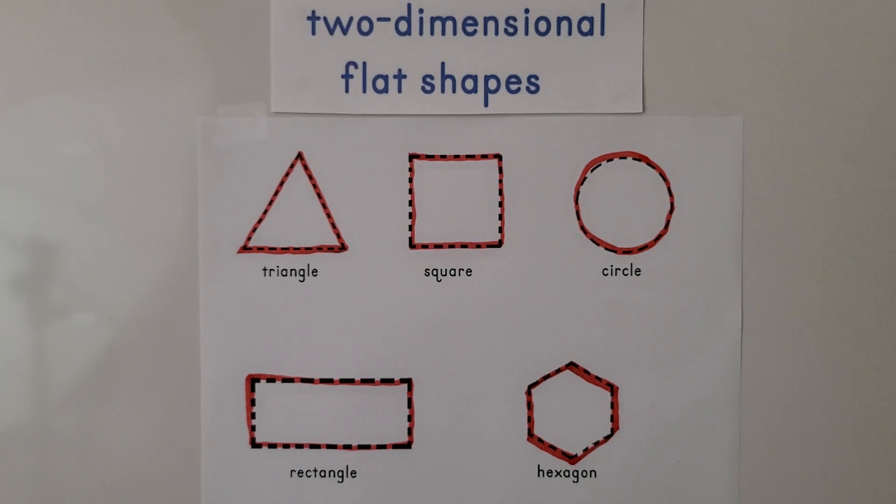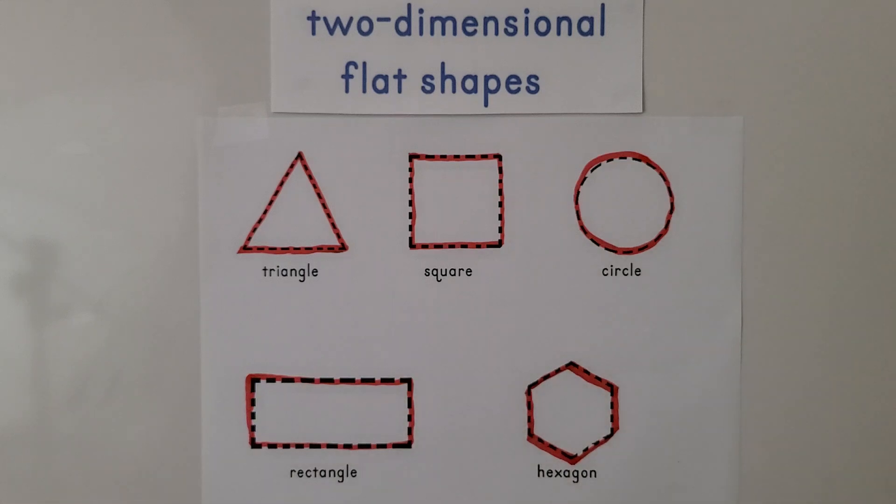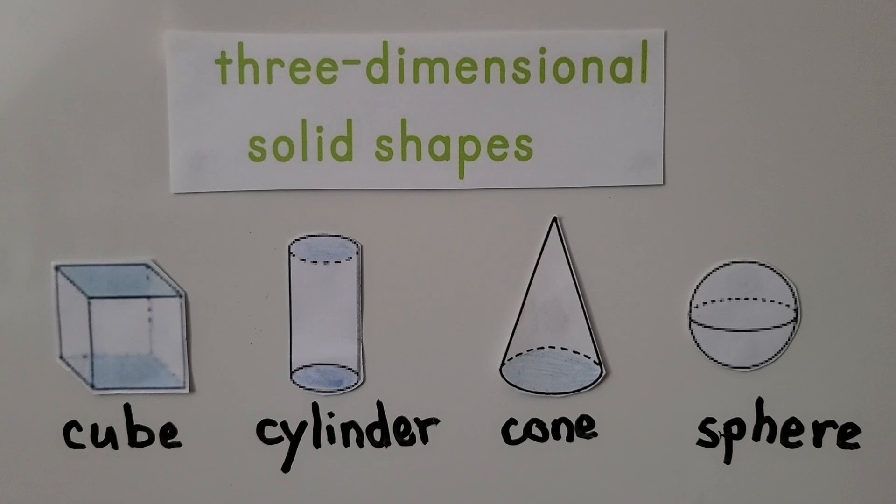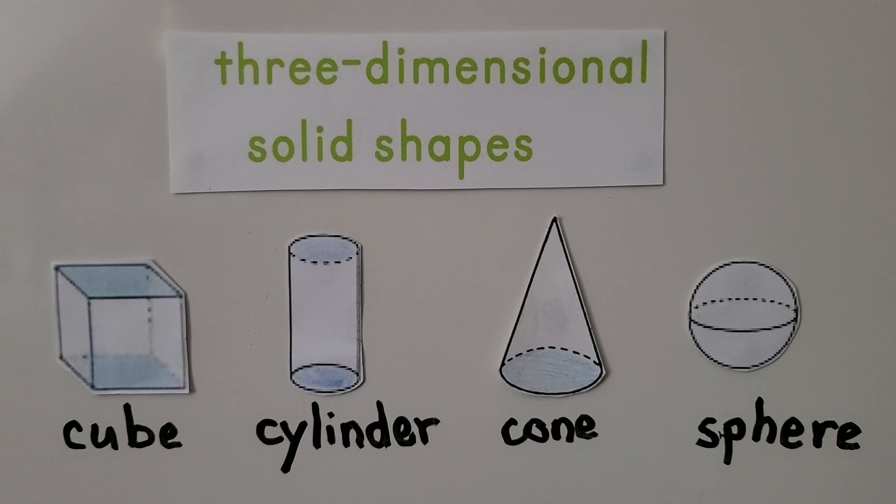Two-dimensional shapes are flat shapes. They're all flat. Three-dimensional shapes are solid shapes. They're not flat. We have a cube, a cylinder, a cone, and a sphere.